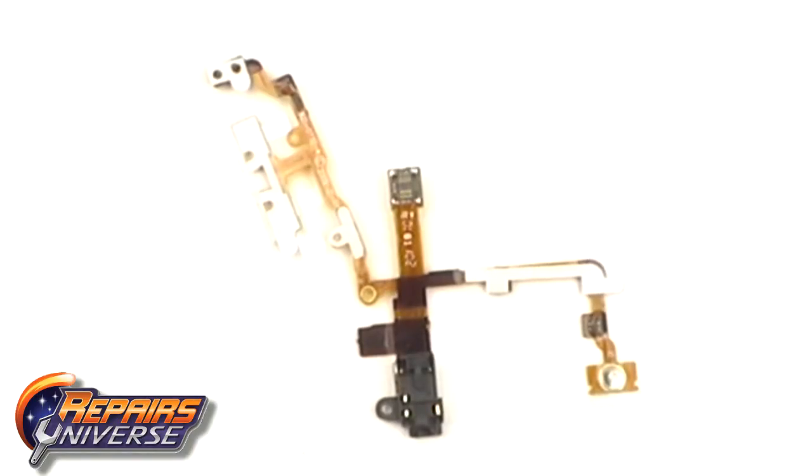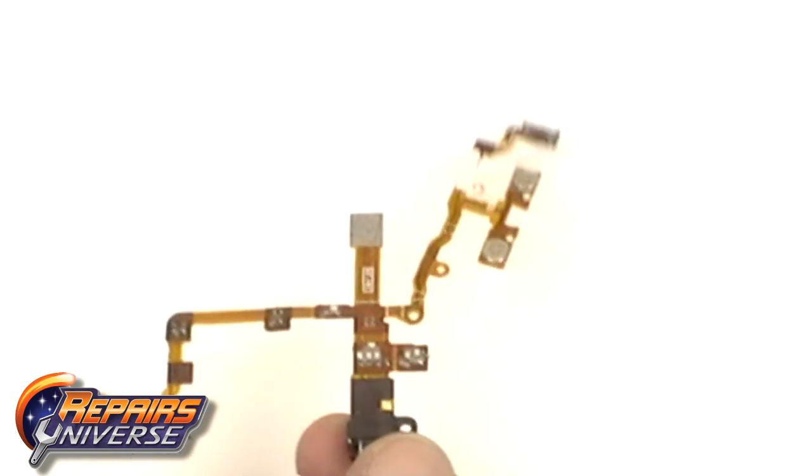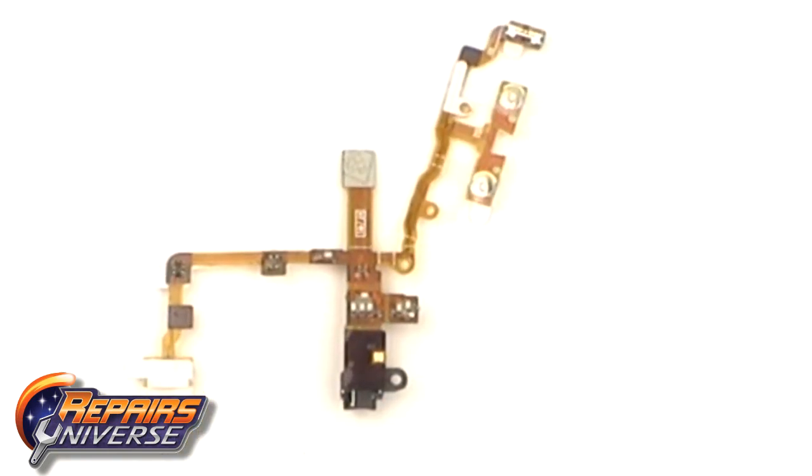If you can't hear through your headphones, or if your volume and power buttons no longer work, then we suggest replacing the headphone audio jack for this device. It comes with the volume and power button flex cables included.